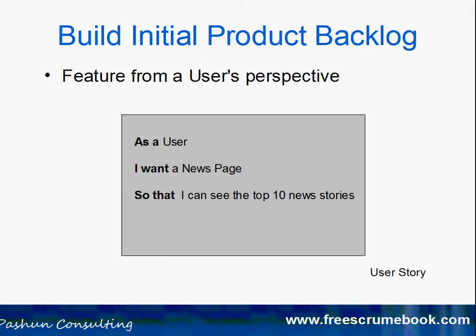The first thing we need to do is build the product backlog. The product backlog typically consists of user stories — this is the convention within Agile. User stories are nothing more than features from a user's perspective. If you want to build a product, the most important person is the user you're building it for, so putting them at the forefront of everything you're doing means you will be delivering value.